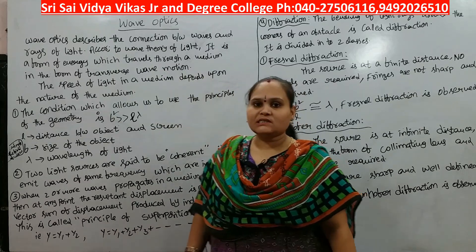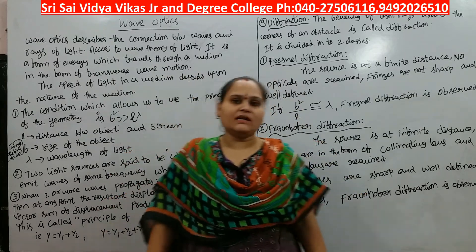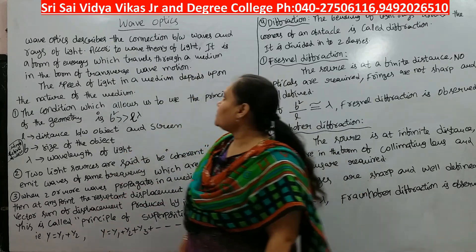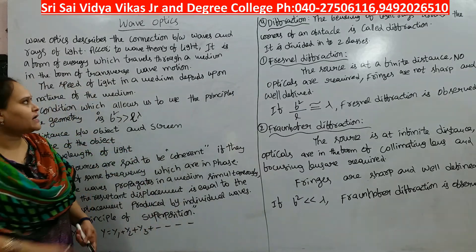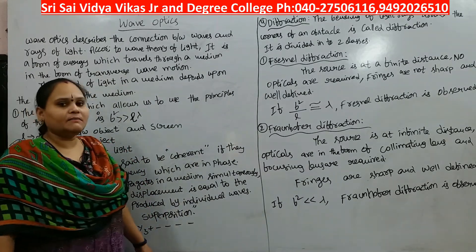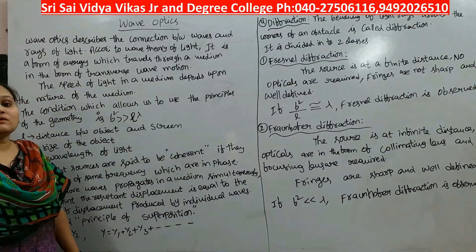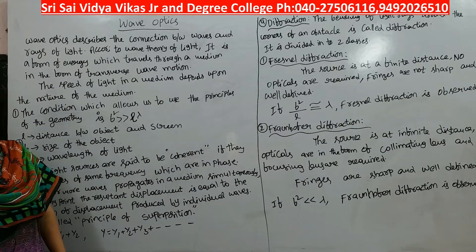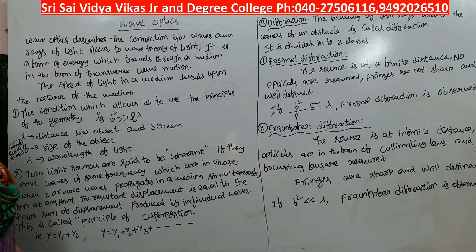Wave optics describes the connection between the waves and rays of light. According to the theory of light, it is a form of energy which travels in a medium in the nature of a transverse wave. This is what wave optics is about.